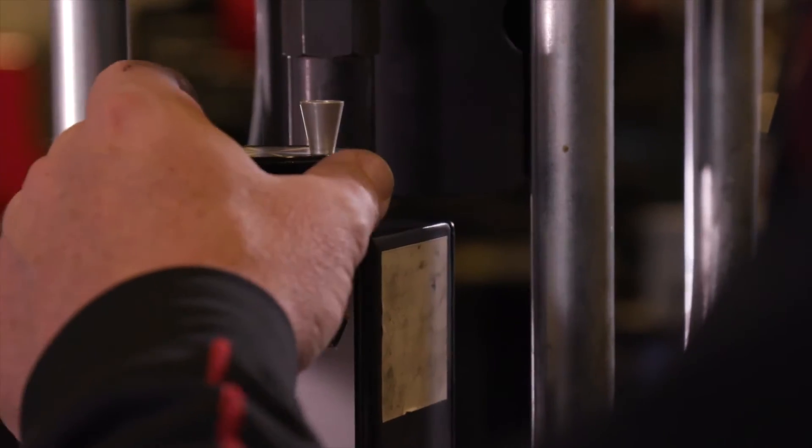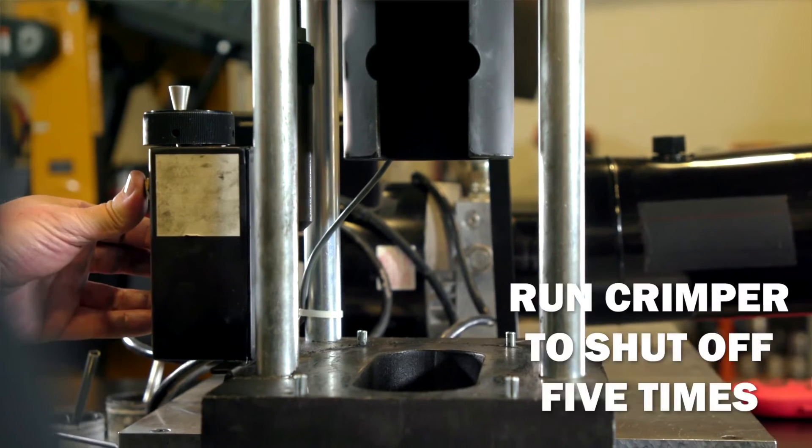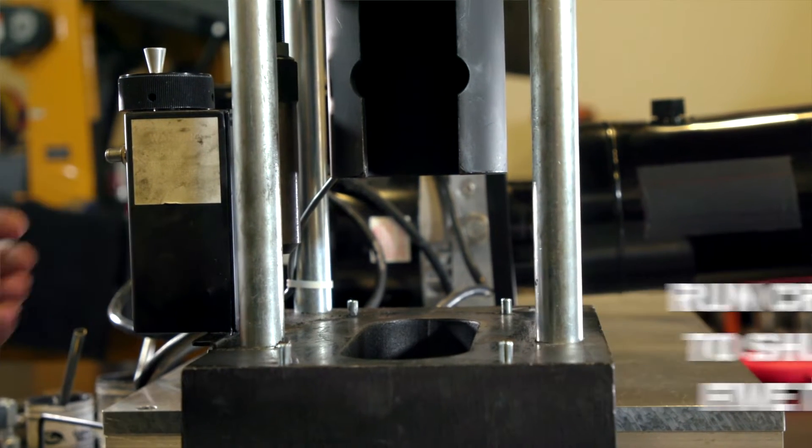To properly cycle a newly installed crimper, dial in a setting of 2.00 and run the crimper down to shut off with no die set loaded five times.